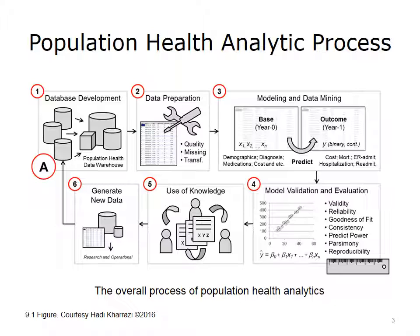Sometimes, however, the accuracy of the model is also measured on the outcome variables available in the same base year. The latter approach is usually referred to as the concurrent model, to differentiate it from the former predictive models. As illustrated in box 4, the next step contains the model's validation and evaluation process. In this phase, the analysts use various statistical and data mining concepts to measure how good the model is in differentiating the outcome variable, and how reproducible it is when used on other data sets. Some of these evaluation concepts include measuring the model's validity and reliability, goodness of fit, consistency, and reproducibility, and parsimony.